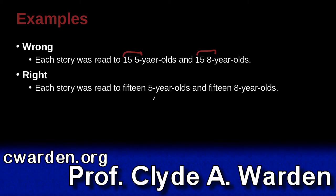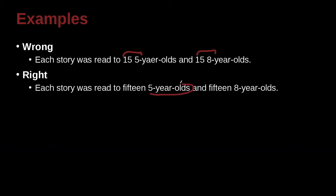So what do we do? We need to change one of them to be spelled out. In this case, because it's a hyphen, this is kind of a group 5-year-olds and this is a group 8-year-olds. We can't change that, but we can go ahead and spell out the words before, so 15 and 15.